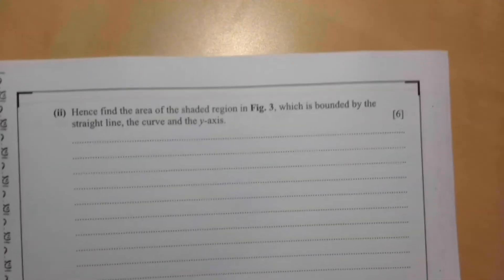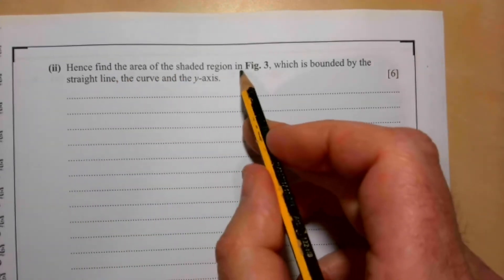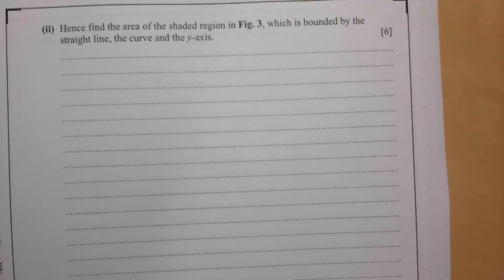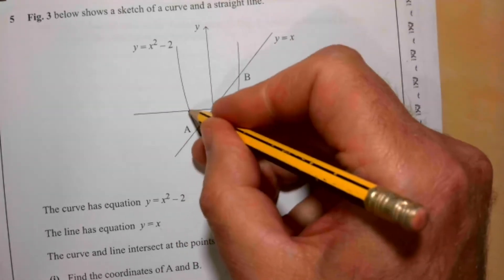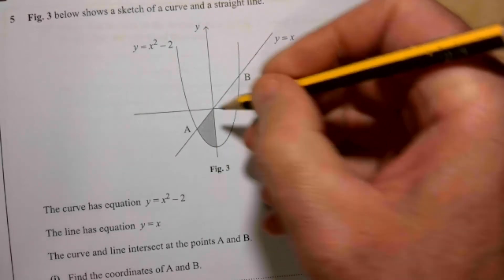And on to part 2, hence, so that means using the information we've found before, find the area of the shaded region in figure 3, which is bounded by the straight line, the curve, and the y-axis. So here is our straight line, here is our curve, and here is our y-axis. Here's what we're going to do.